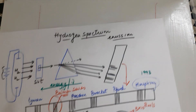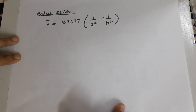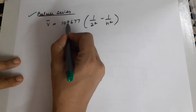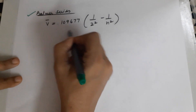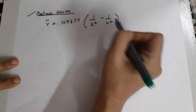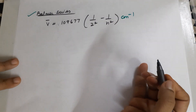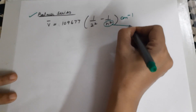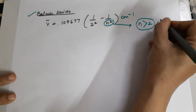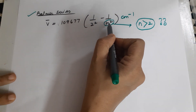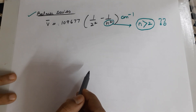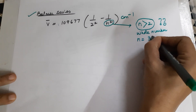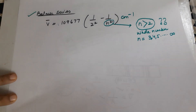Coming to the formula given by Balmer for the wave number of spectral lines: the wave number can be found by the formula 109677 multiplied by (1/2² − 1/n²), in units of cm⁻¹. The value of n must be greater than 2, otherwise the wave number becomes negative. It was always found to be a whole number, so n can have values 3, 4, 5, up to infinity.